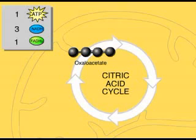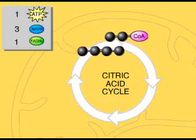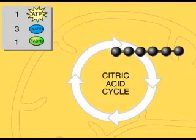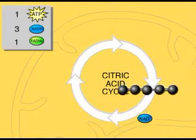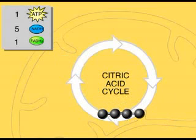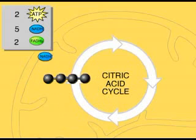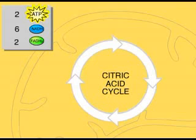Since two acetyl CoA molecules are produced for each glucose molecule broken down, a second acetyl CoA enters the citric acid cycle. The same series of reactions occurs, releasing carbon dioxide and producing more NADH, FADH2, and ATP. The cell has gained two ATPs that can be used directly. However, most of the energy originally contained in the bonds of glucose is now carried by the NADH and FADH2 molecules.